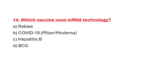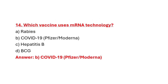Question 14: Which vaccine uses mRNA technology? Option A: Rabies. Option B: COVID-19. Option C: Hepatitis B. Option D: BCG. Correct answer is Option B: COVID-19.